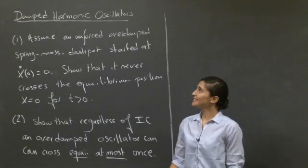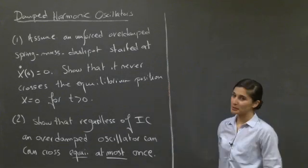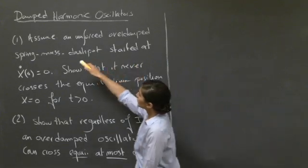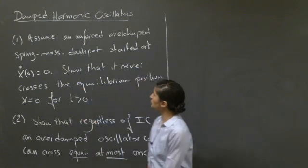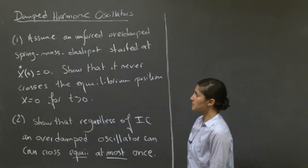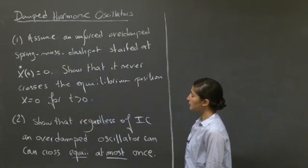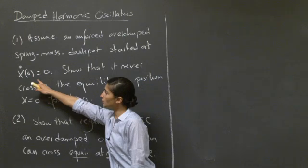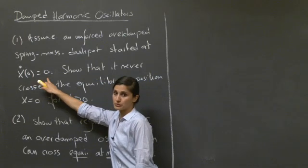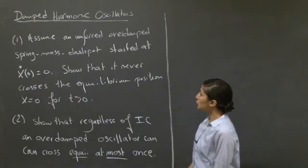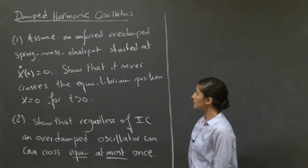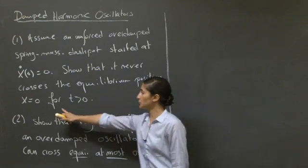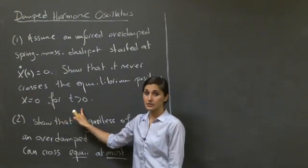Welcome to this recitation on damped harmonic oscillators. You're asked to assume an unforced overdamped spring-mass-dashpot that is started at x-dot of 0 equals 0, so at rest, and to show that it never crosses the equilibrium position x equals 0 for t greater than 0.